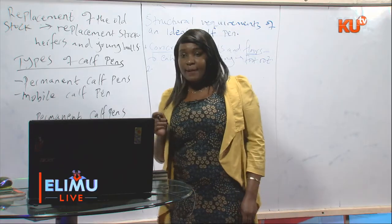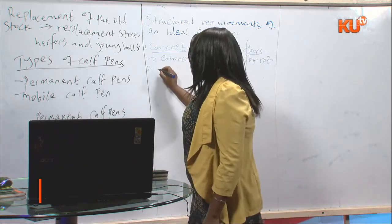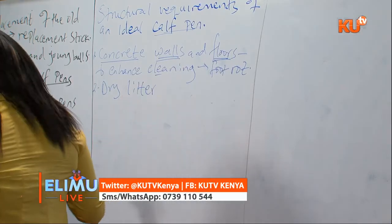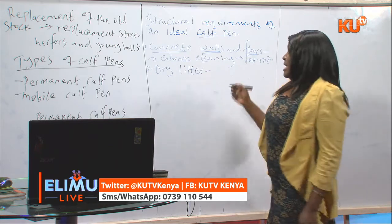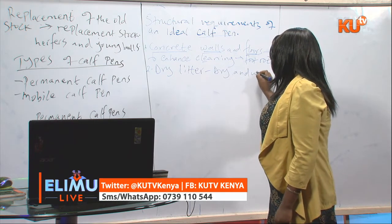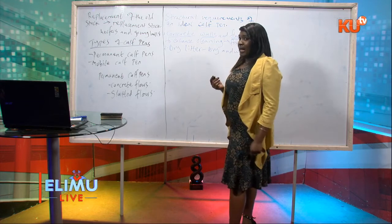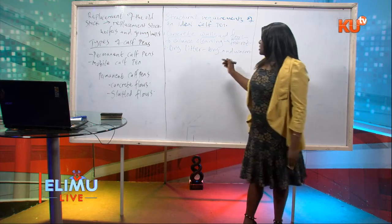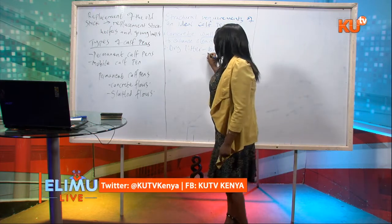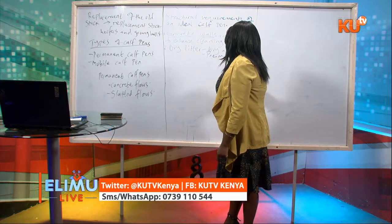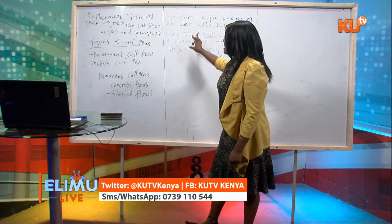Number two requirement of an ideal calf pen is that it should be dry. To ensure it is dry all the time, place dry litter on the floors. This ensures that the calf pen is dry and warm. A dry and warm calf pen is necessary because warmth ensures the animal is healthy — it does not suffer from cold conditions that can cause pneumonia. Damp conditions in the calf pen can cause pneumonia, so dry litter helps get rid of incidences of pneumonia.